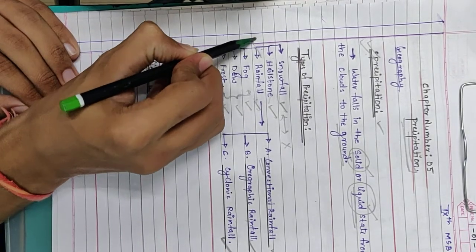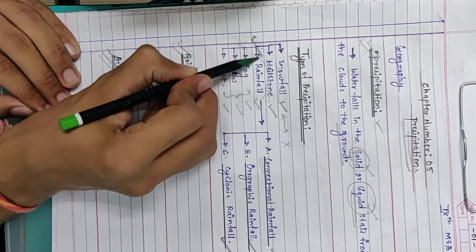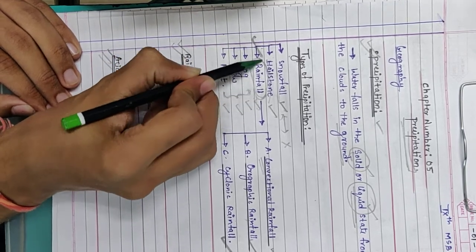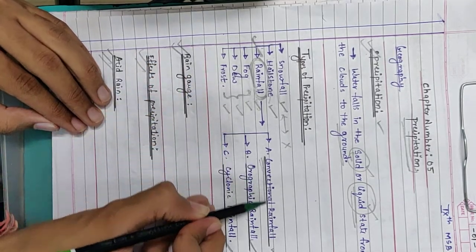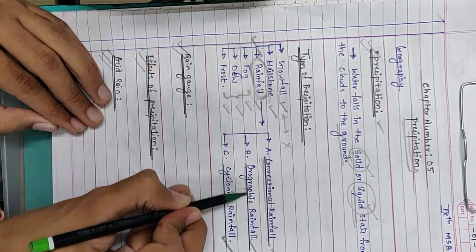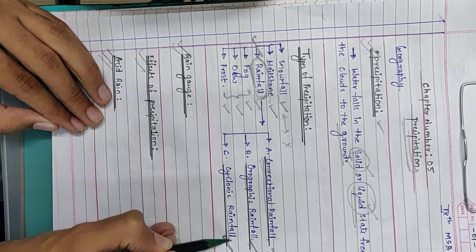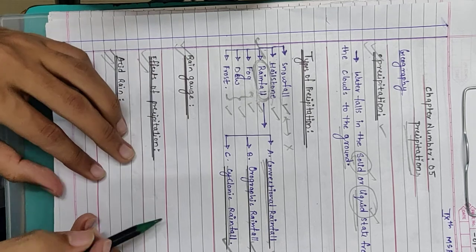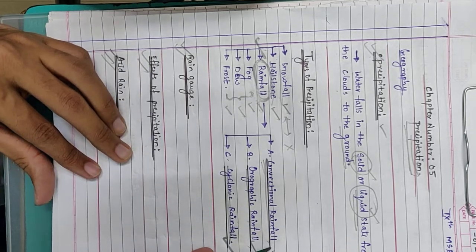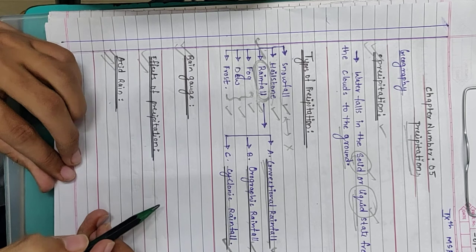First, we are going to start with rainfall. The first topic we will take under types of precipitation is rainfall, under which we will study conventional rainfall, orographic type of rainfall, and cyclonic rainfall. We are going to start with conventional rainfall for the upcoming video.